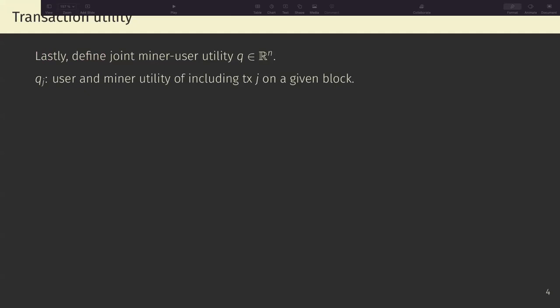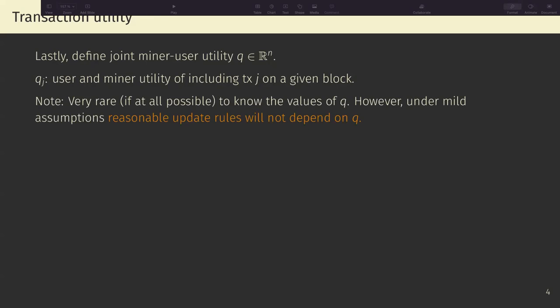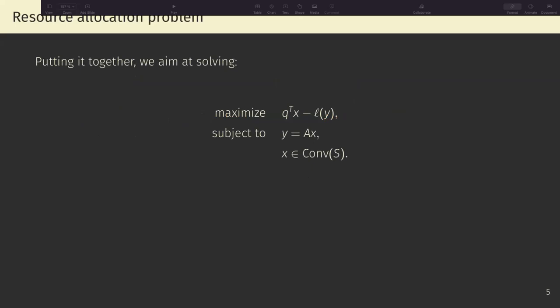Now let's switch on to defining the network utility or the participant's utility. By the way, I cannot see my mouse if there's someone writing stuff on the chat, I cannot see you. Anyways, so we define the joint miner user utility as Q. Q is a vector in R^n, where the j-th component of Q is the user and miner utility of including a transaction j on a given block. Now, it is very rare, if at all possible, to know the values of Q. However, under mild assumptions, their results show that their update rules don't necessarily depend on Q, which is useful. And given this, we can define the participant utility U of X as Q transpose X, basically as the sum of the utilities, of the joint miner user utilities of those transactions that get included in the block.